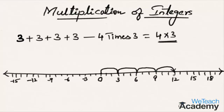Therefore, by taking 4 jumps each of 3 steps we reach at 12. Therefore 4 multiplied by 3 is equal to 12.